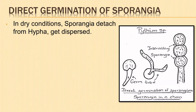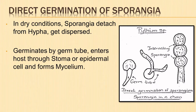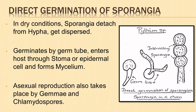In direct germination, in a dry atmosphere, the sporangia get detached from the hyphae and are dispersed by wind or water. On reaching a suitable host, the sporangium germinates by a germ tube which enters the host either through a stoma or through an epidermal cell and forms the mycelium. Asexual reproduction also takes place by the formation of gemmae and chlamydospores.